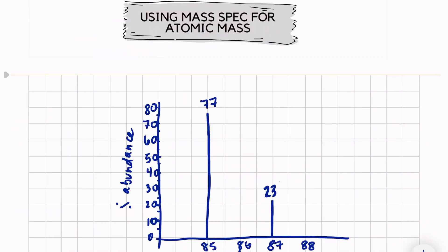Hi, welcome back. In this video I'm going to show you how to use mass spec data to find the average atomic mass. It's pretty easy, so let's look at our mass spec data. We have percent abundance and mass.